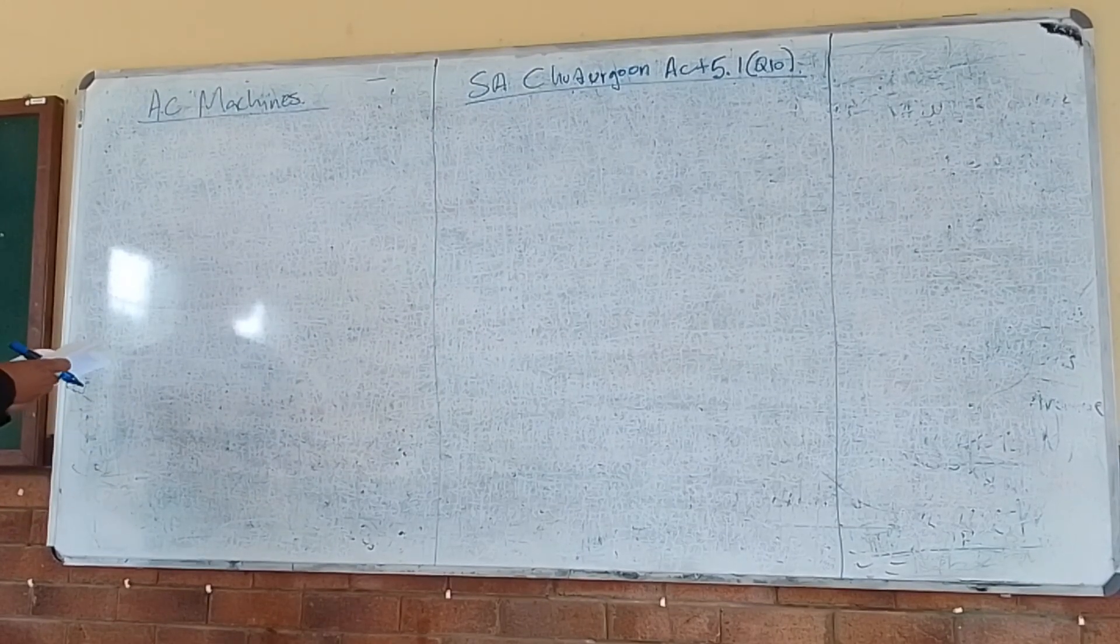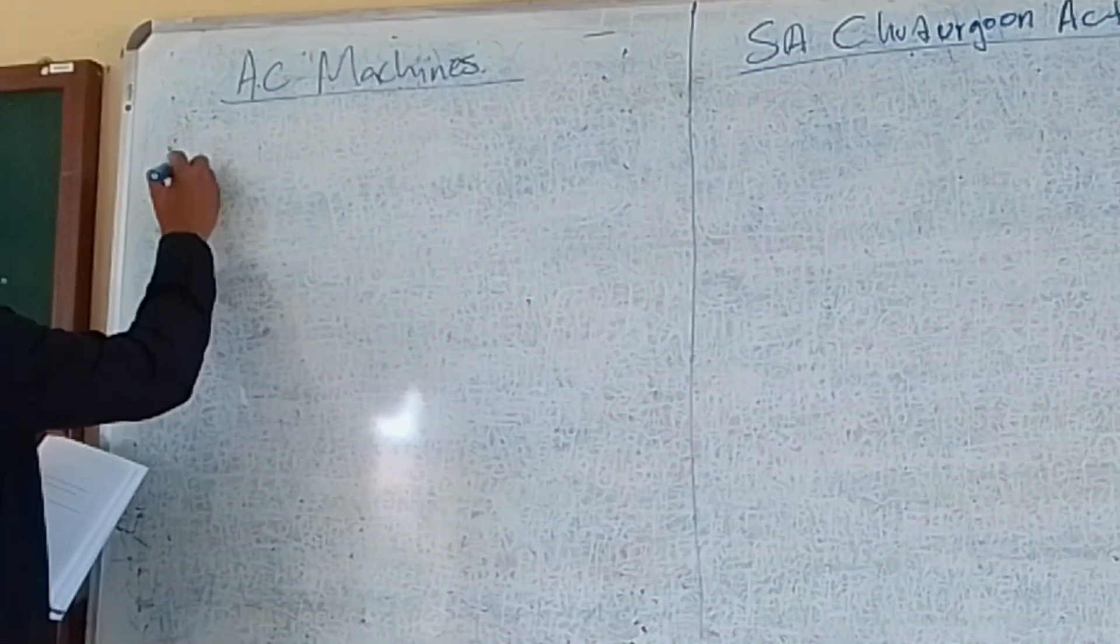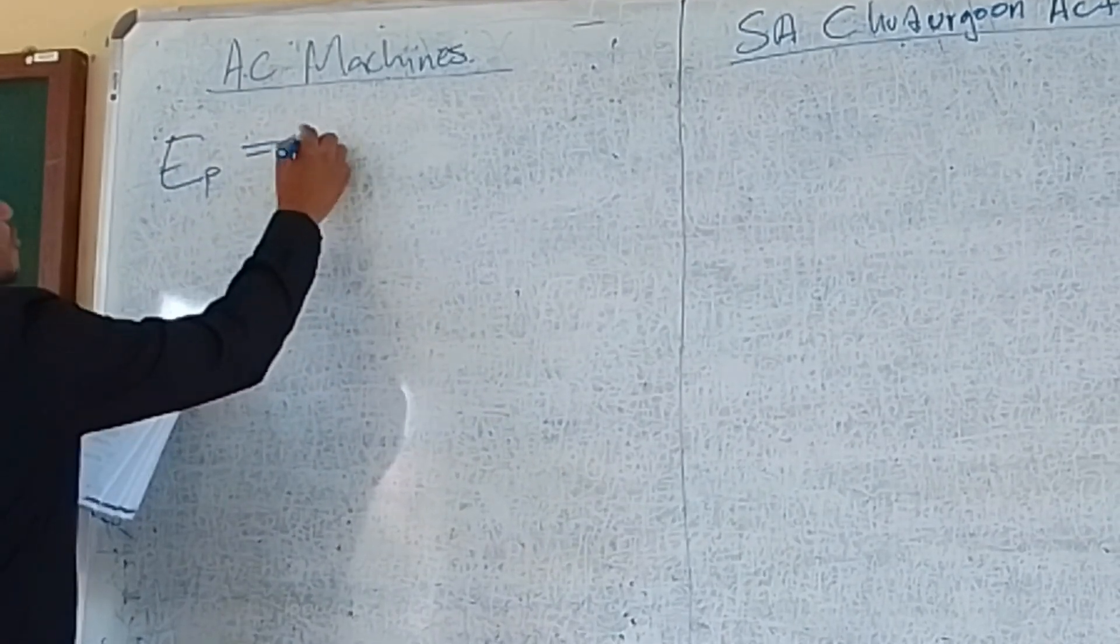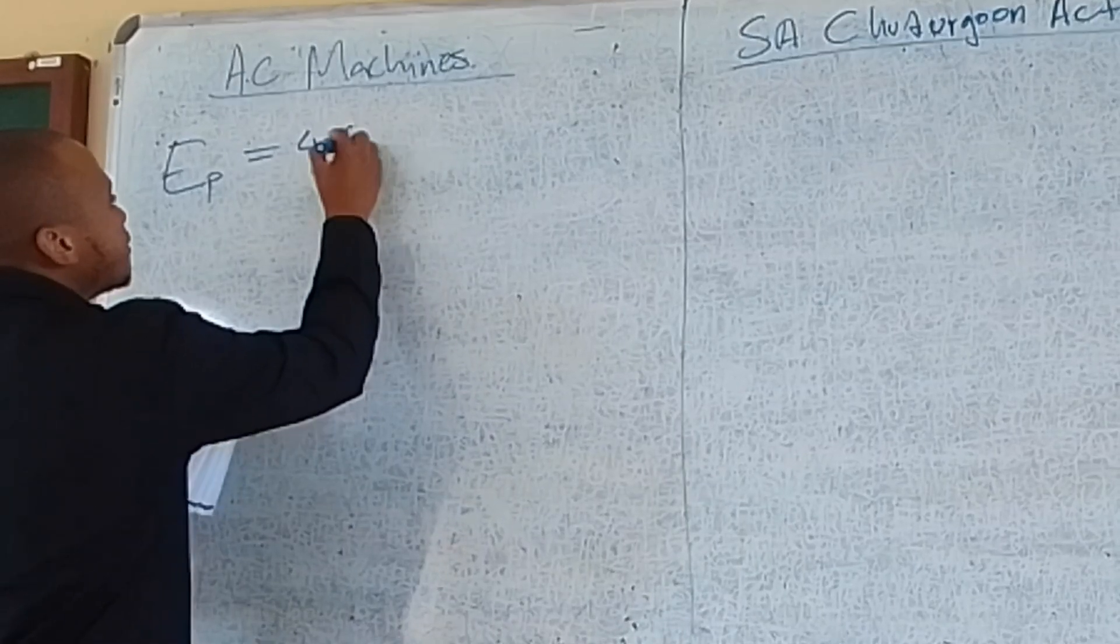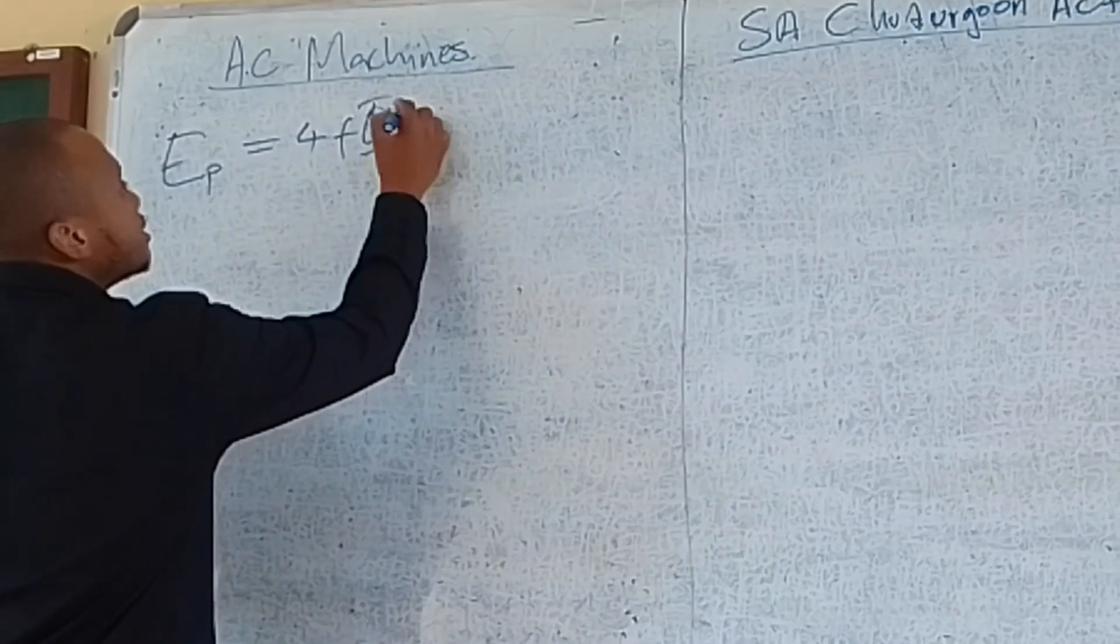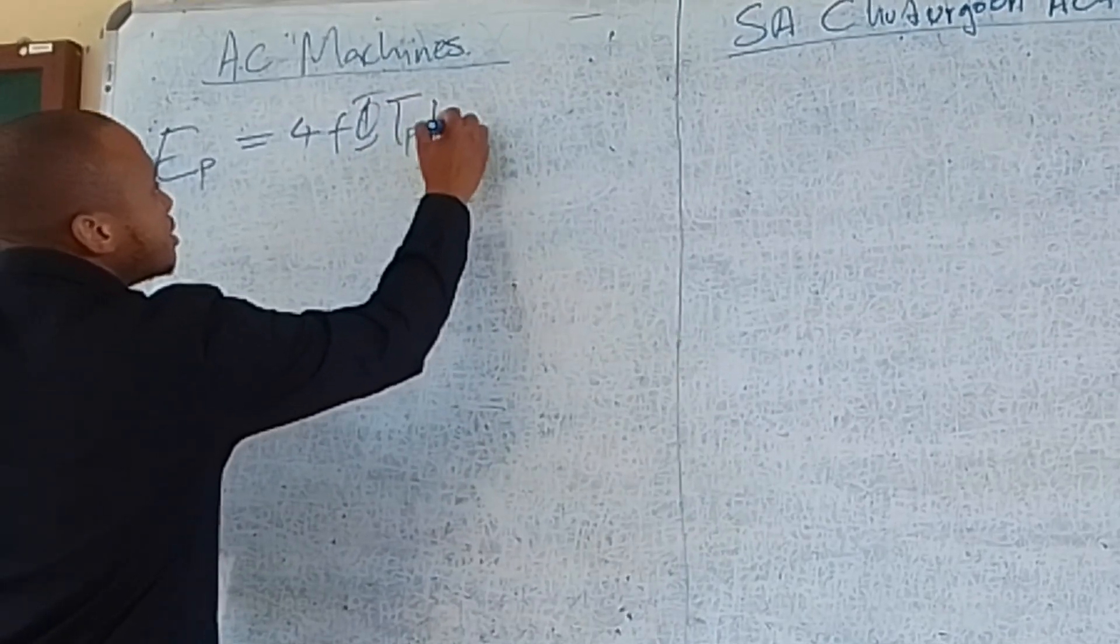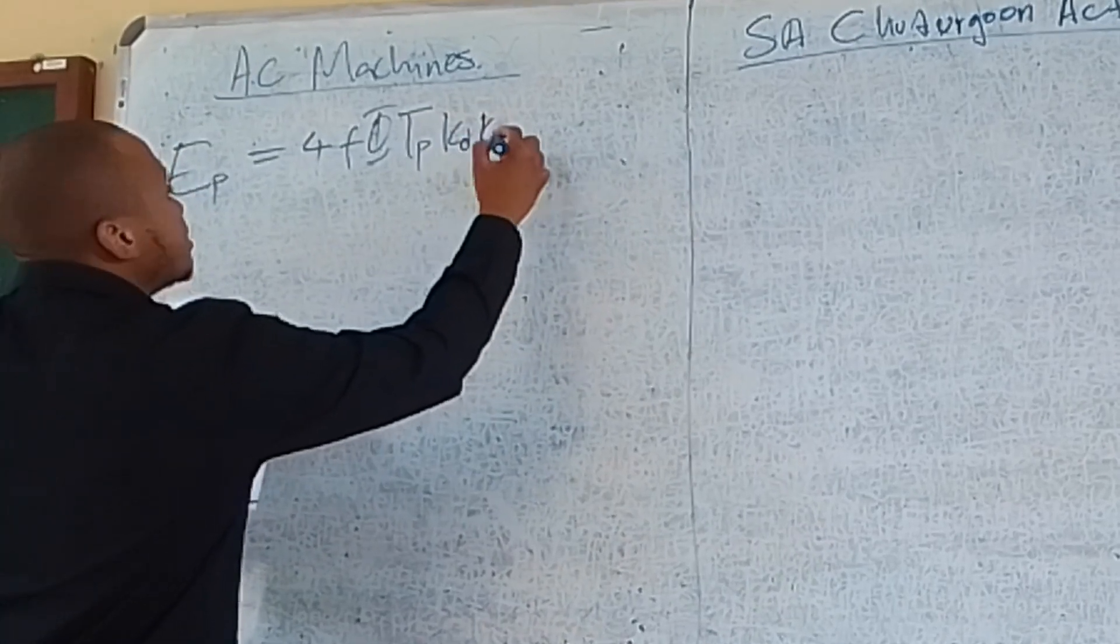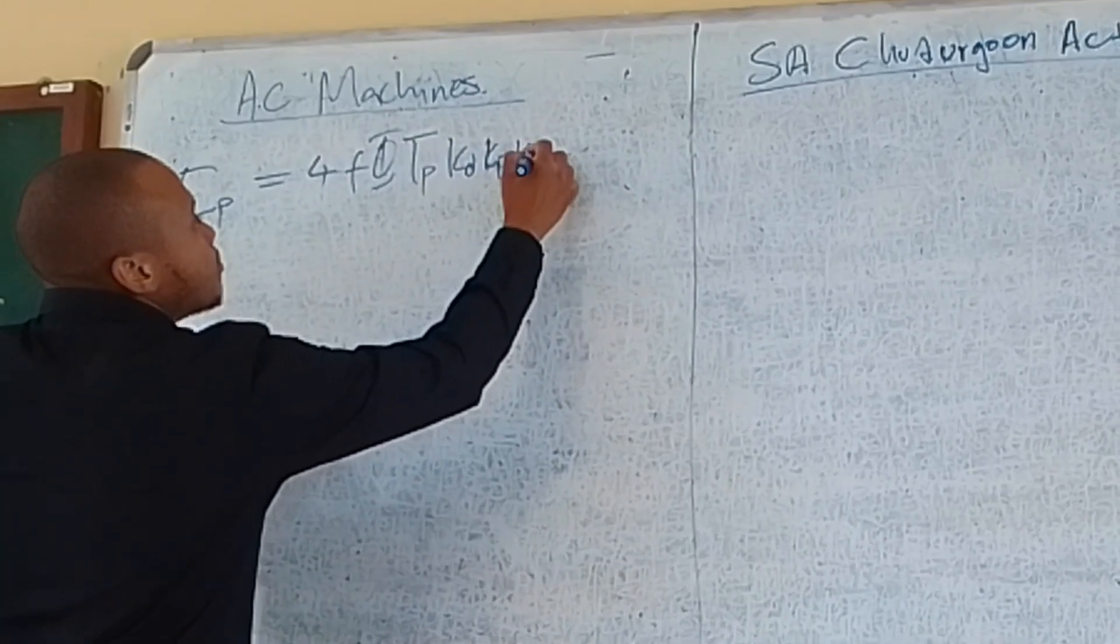We need to calculate the generated EMF. To do that, we use the right equation. The generated EMF per phase is equal to 4 multiplied by the flux, multiplied by the frequency, multiplied by turns per phase, the distribution factor Kd, pitch factor Kp, and the form factor Kf.